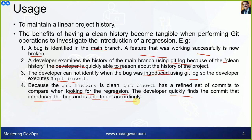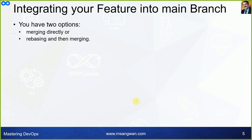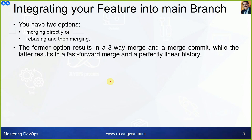Integrating your features into the main branch: you have two options — merging directly, or rebasing then merging. Which one is beneficial? The former results in a three-way merge and a merge commit, while the latter results in a fast-forward merge and a perfectly linear history.